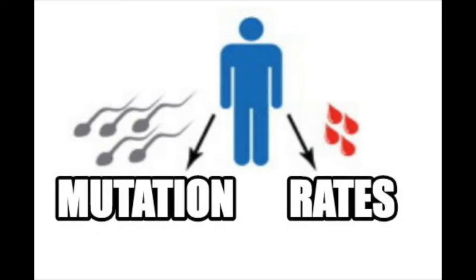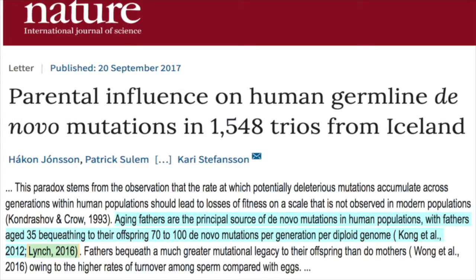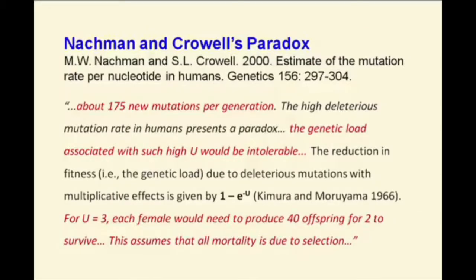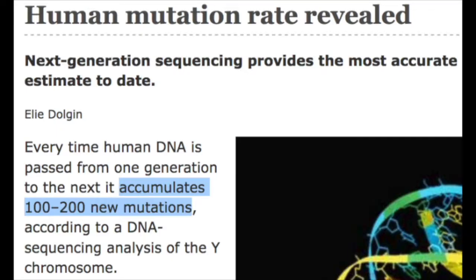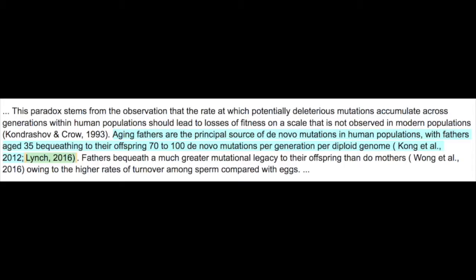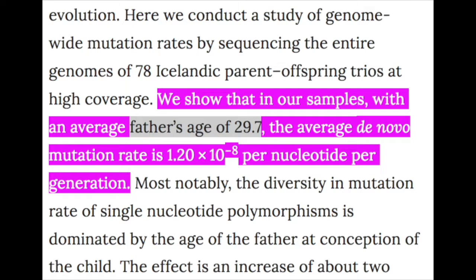Mutation rates — the mutation rate per generation is an observable fact; this is not open for debate. In humans, the rate is anywhere between 63.2 and 238 new mutations per generation. The factors that make the largest impact on mutation inheritance are the age of the parents — the older the parents, the more mutations get passed down to offspring.